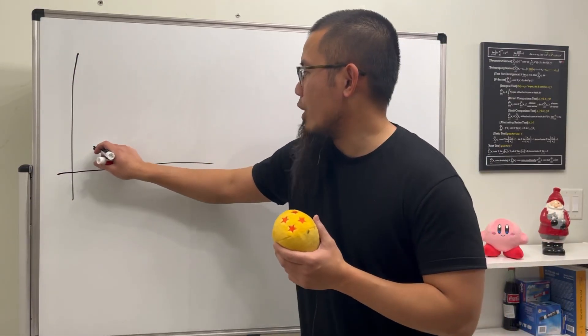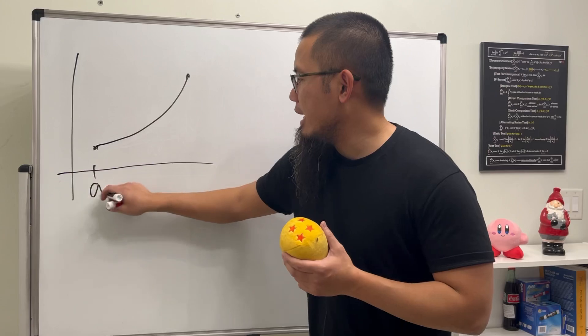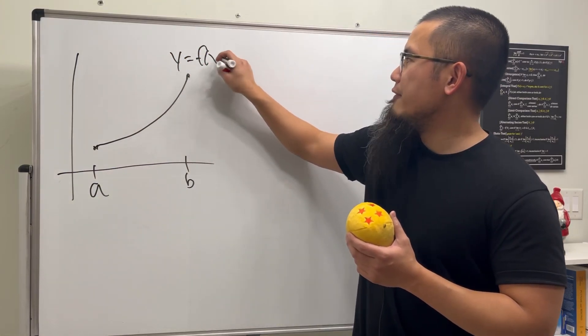First, of course, we have to have an arc, so let's say the arc is right here, and then let's say we are going from A to B, and then we have the function Y is equal to f of X.